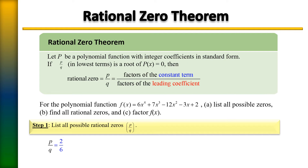When we list possible zeros we must include both positives and negatives because we want all possible rational zeros. So we write it as plus or minus 1, plus or minus 2 on top, over plus or minus 1, plus or minus 2, plus or minus 3, plus or minus 6. We have all possible factors of 2 and all factors of 6, each with plus or minus. We then need to write it out in expanded form to list them all on the next page.